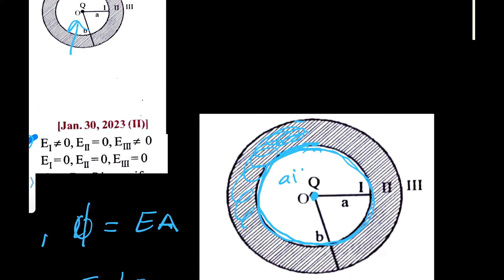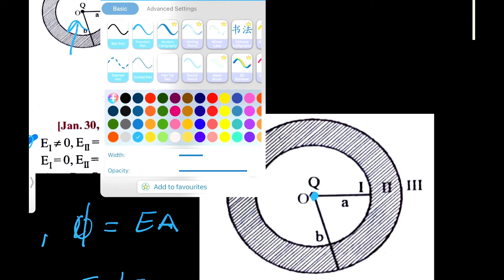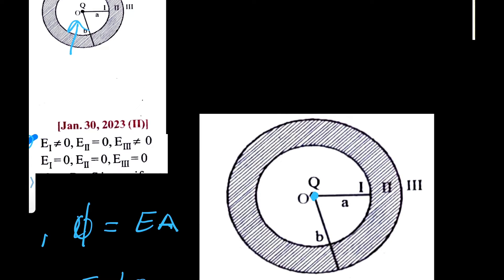Inside the conducting shell, the inner part and outer part are air, but this region is inside the metal. Now, since we have a positive charge q, it will attract electrons, and negative charges will be induced on the inner surface of the shell. Let me draw a Gaussian surface inside the conductor.